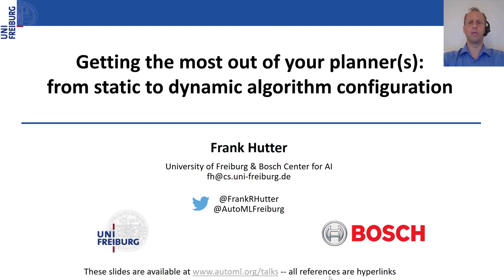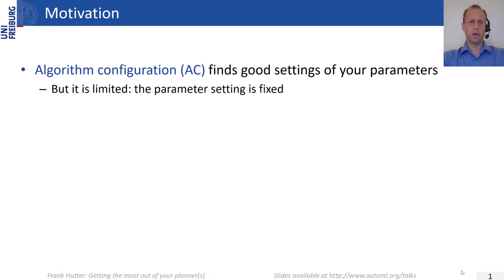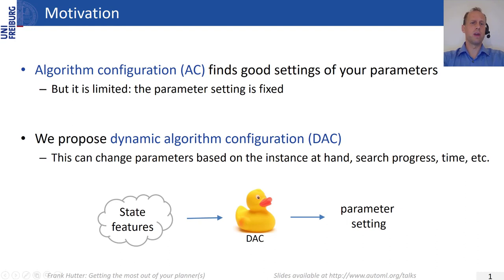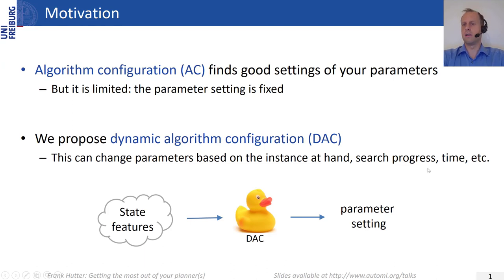This talk is about getting the most out of your planners. Algorithm configuration finds good settings of your parameters — useful because nobody enjoys optimizing hyperparameters by hand, especially on a per-domain basis. But algorithm configuration is still limited: it only finds a single fixed parameter setting and can't adapt to the instance at hand or to search progress. What I want to propose is dynamic algorithm configuration — DAC — which takes state features and chooses the right parameter setting adaptively.